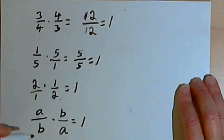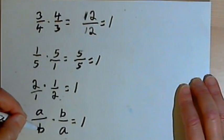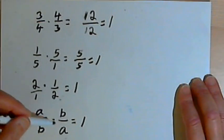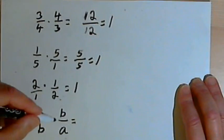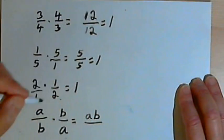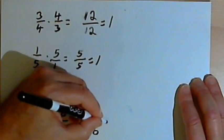And in general, if I have any number, a over b, and I flip it over to get its multiplicative inverse, to get its reciprocal, when I multiply it out, for that a over b times b over a, I'm going to get ab over ab, and that equals 1.